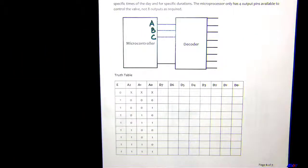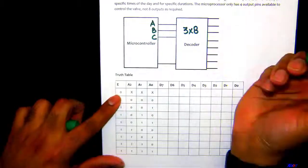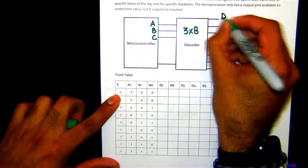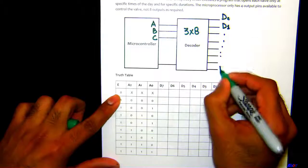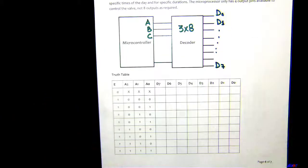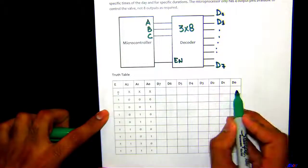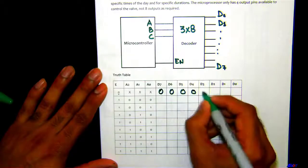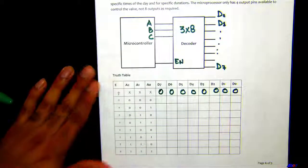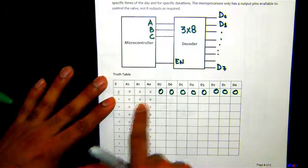Since we have three outputs from the microcontroller and eight sprinkler zones, we can use a 3-to-8 decoder. The decoder has outputs D0 through D7 and an enable pin. If enable is zero, then all outputs are going to be zero.